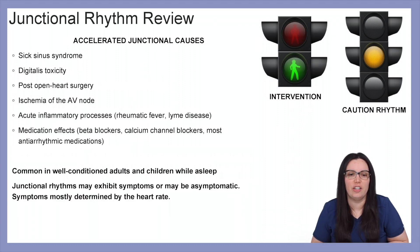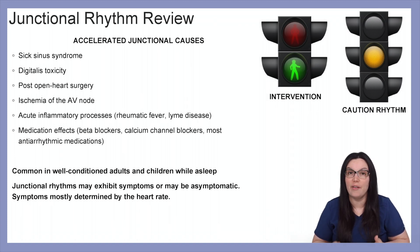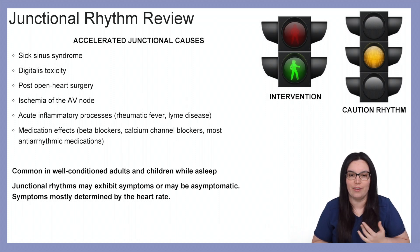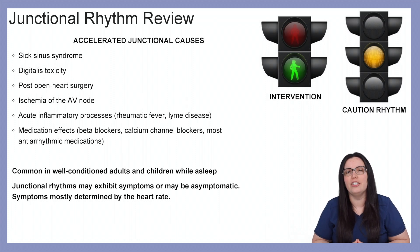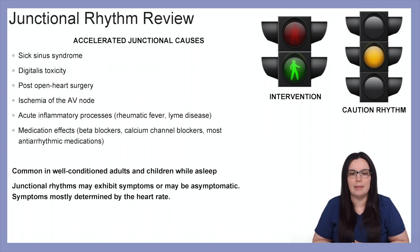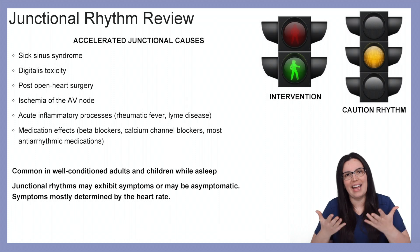Causes for accelerated junctional rhythm include sick sinus syndrome, digitalis toxicity, post open heart surgery, ischemia of the AV node, acute inflammatory processes such as rheumatic fever or Lyme disease, and medication side effects from beta blockers, calcium channel blockers, and most anti-arrhythmic medications. In well-conditioned adults as well as children who are asleep, this can actually be considered normal. Symptoms are mostly determined by the heart rate itself.